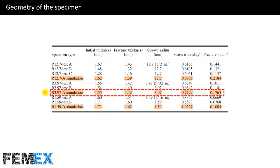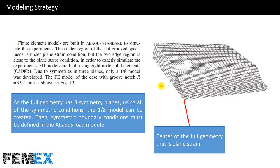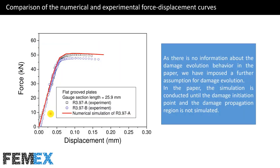In the premium tutorial, this specimen is simulated. As the full geometry has three symmetry planes, using all of the symmetric conditions, the 1/8th model can be created. Symmetric boundary conditions must be defined in Abacus. This vertex of the 1/8th model is the center of the full geometry that is in plane strain. In this tutorial, we will obtain the red curve that is related to the numerical simulation presented in the paper.